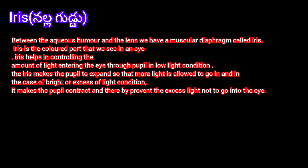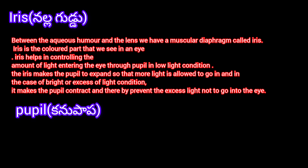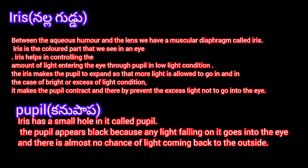The iris helps in controlling the amount of light entering the eye through the pupil. In low light conditions, the iris makes the pupil expand so that more light is allowed in. In bright or excess light conditions, it contracts the pupil.